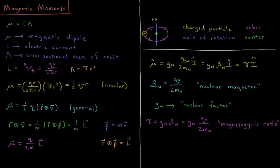So 1 over time is going to be the velocity of our charged particle divided by the circumference of the circle, 2 pi r. And the area of the circle is going to be pi r squared, as is the area for all circles.